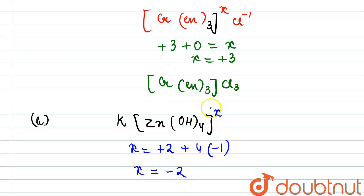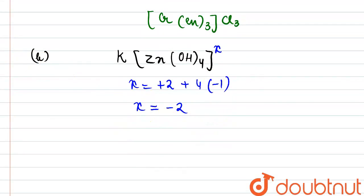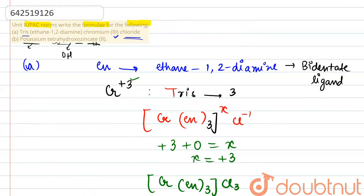So 4 OH ligands would be having a charge of minus 4. So, X comes out to be minus 2. So, here charge would be minus 2. So, to balance that charge, 2 potassium units would be present. So, the ultimate formula becomes K2Zn(OH)4. This is the correct answer. Thank you.